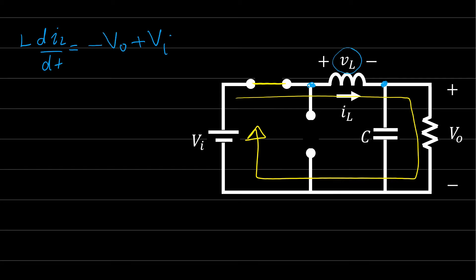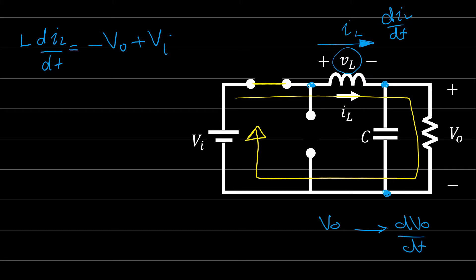What we care about here is the current across the inductor and its first derivative di_L/dt, and also the voltage across the capacitor V_out and its first derivative. We are trying to find the relation between the first derivatives of voltage and current and their values. The voltage across the inductor is L di/dt = V_input minus V_output.